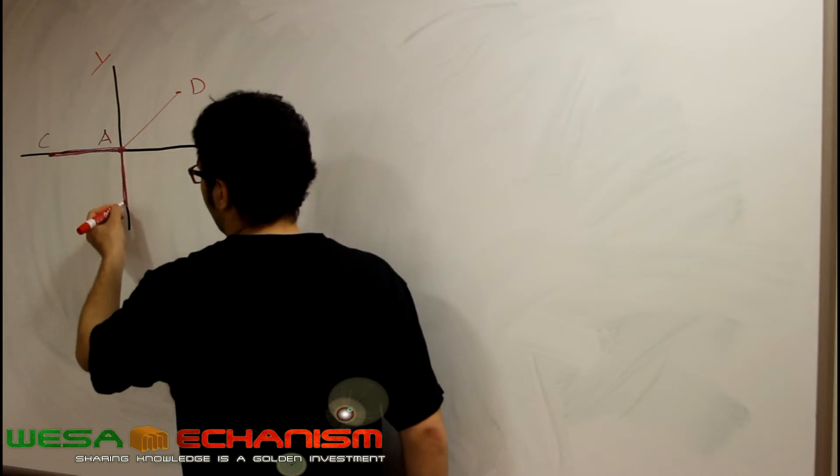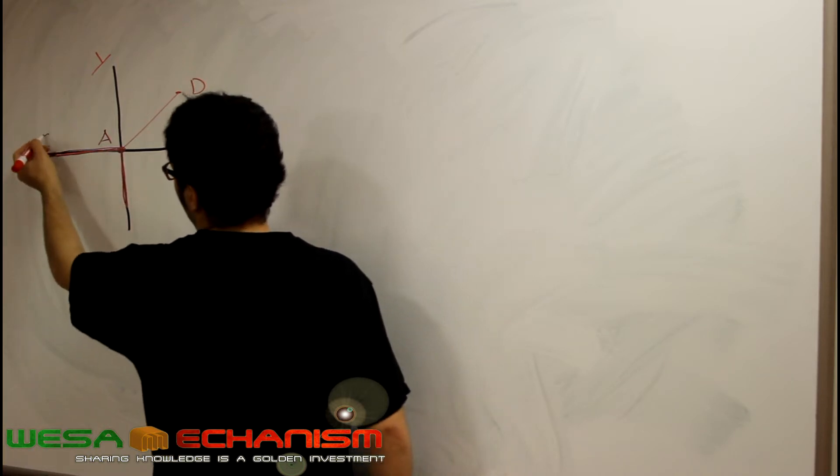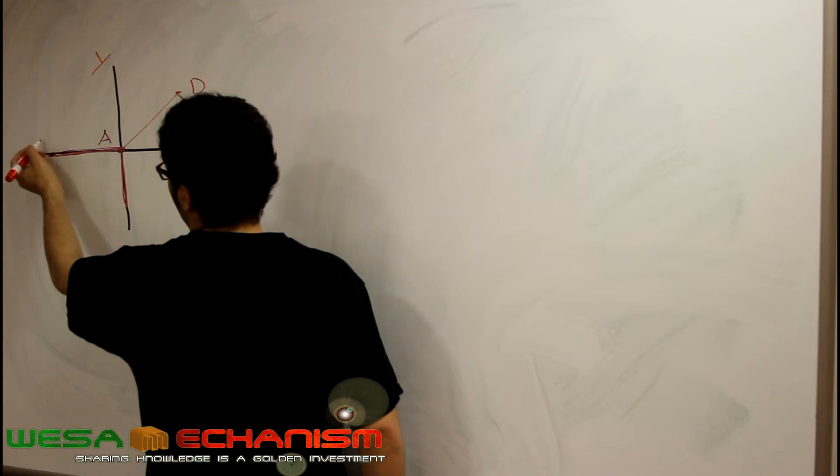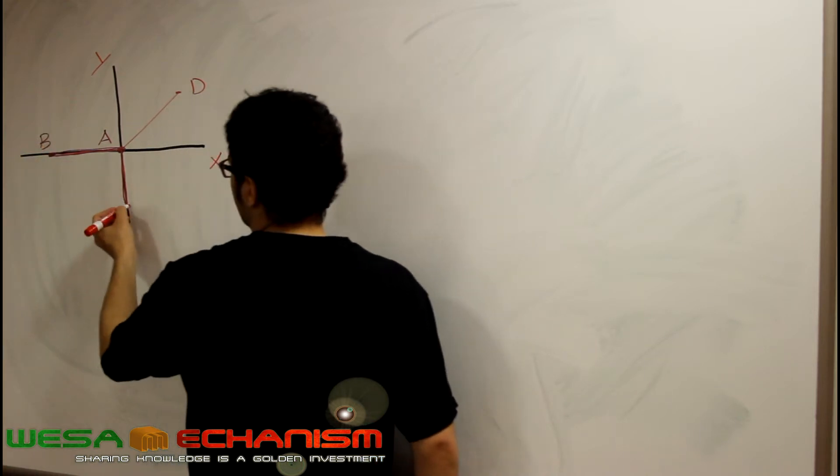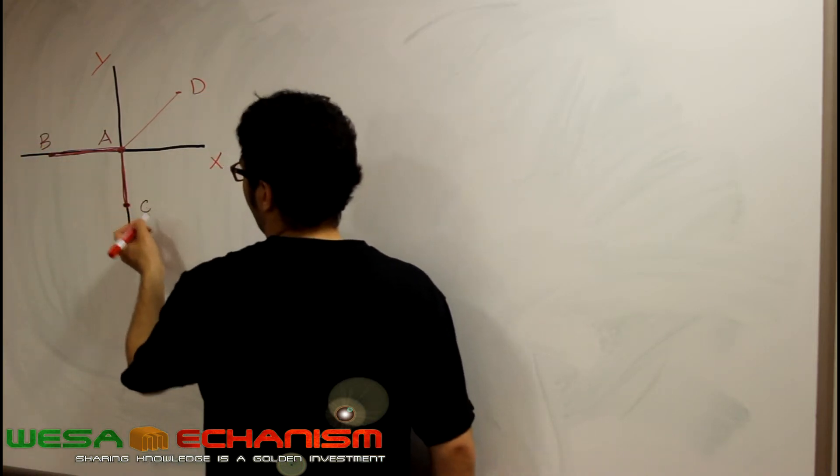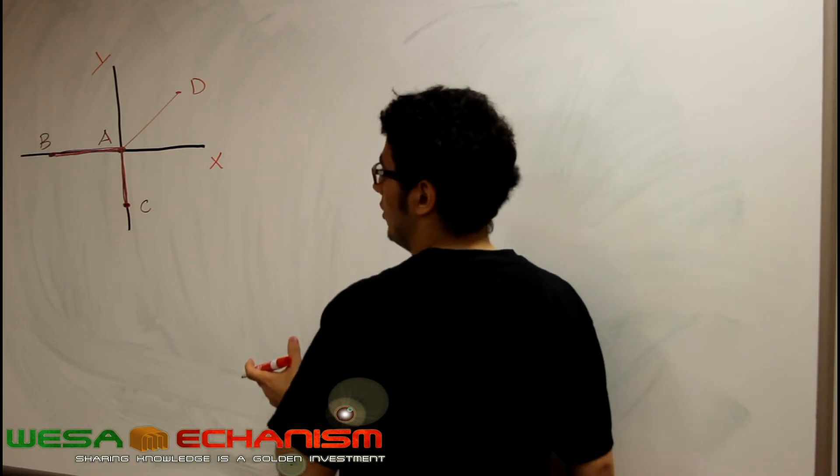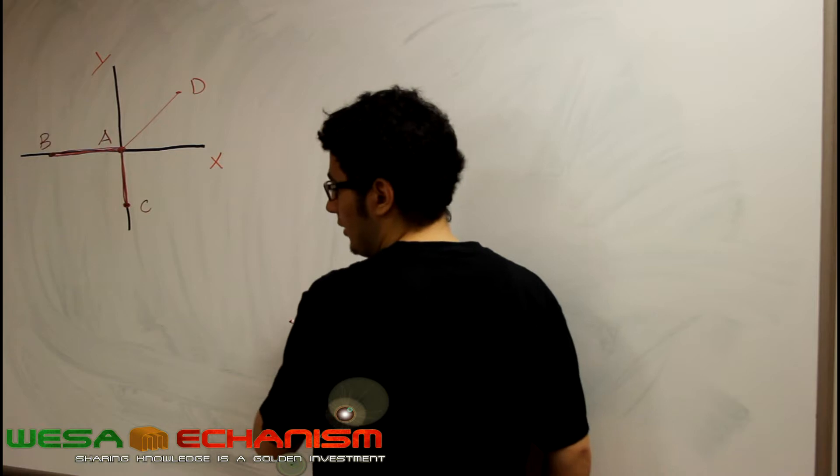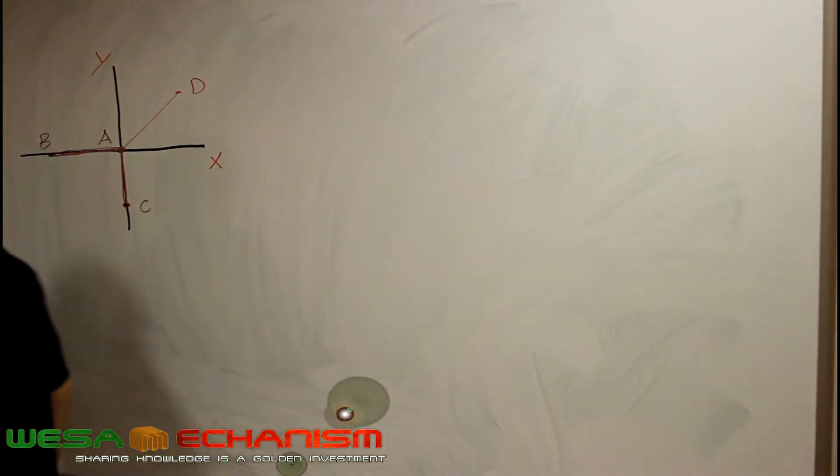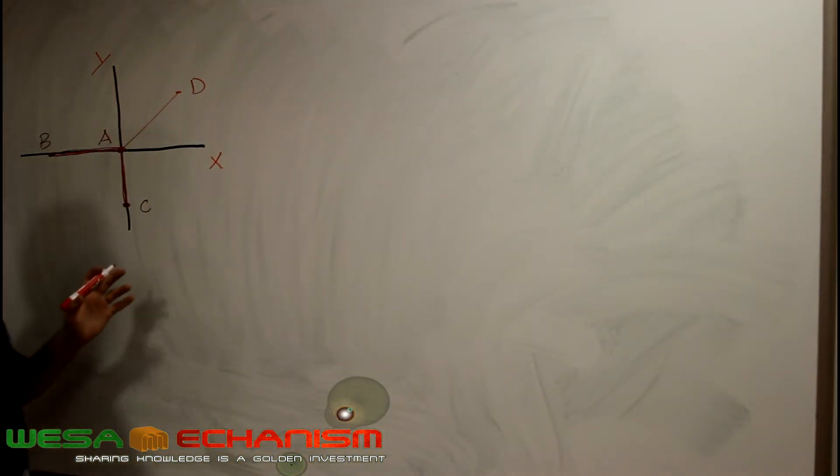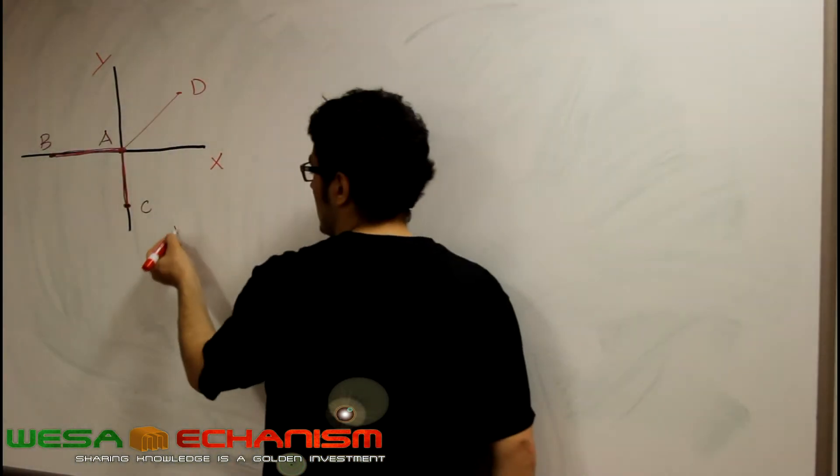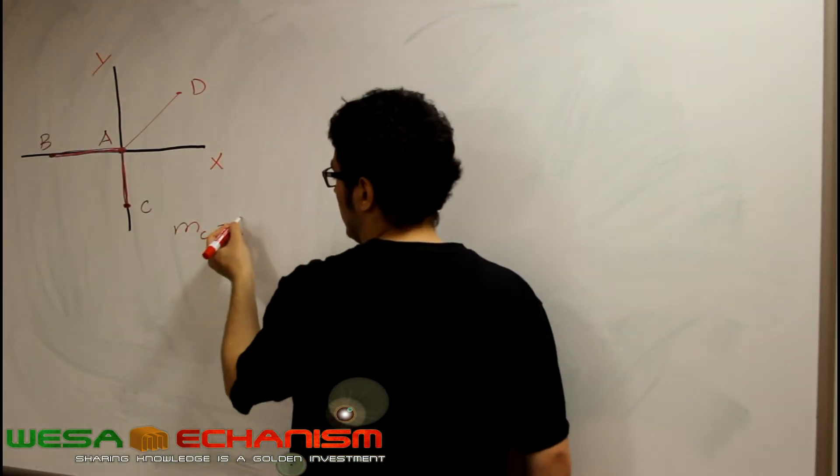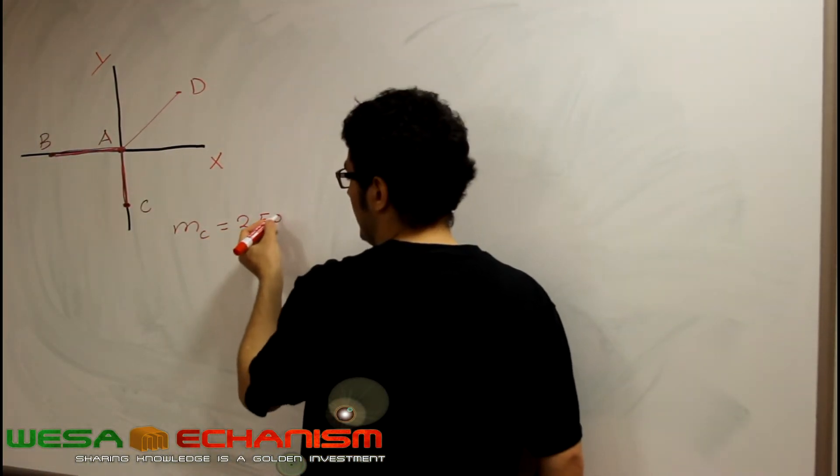And in here we are going to have our... I'm sorry, this is going to be B, and this is going to be C. They gave us the weight of the block. I'm sorry, they gave us the mass of the block, so they gave us MC equal to 250 kg.